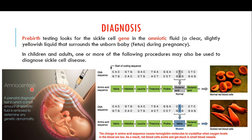In the process of amniocentesis, you take a sample from the amniotic fluid because this fluid contains cells of the baby. Once you have isolated the cells of the baby, you can check for the sickle cell gene in the genome of the fetal cells. You extract the DNA from those cells of the fetus.